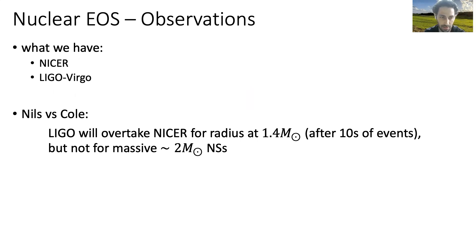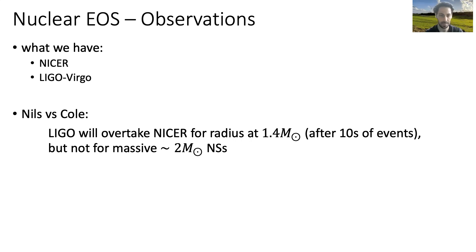One conclusion was that LIGO will overtake NICER in terms of constraining the radius of a canonical 1.4 solar mass neutron star once the sample size of events is several or tens of events. But it won't be able to do so for massive neutron stars. NICER will probably continue to be the only instrument able to constrain the radius of heavy 2 solar mass neutron stars.